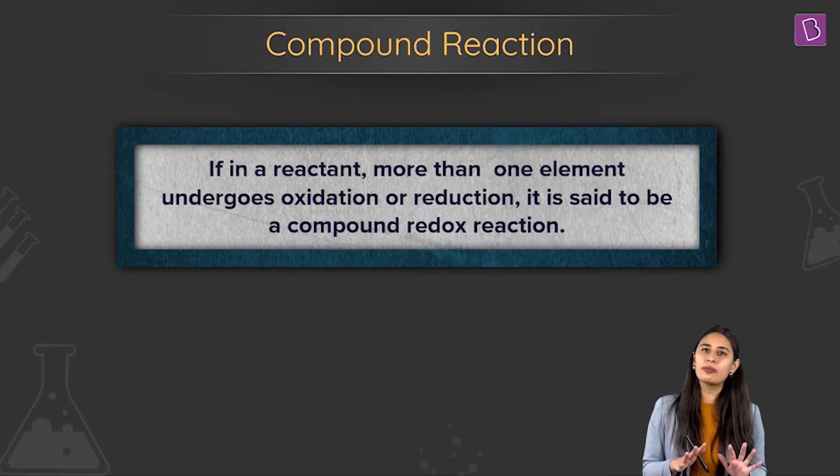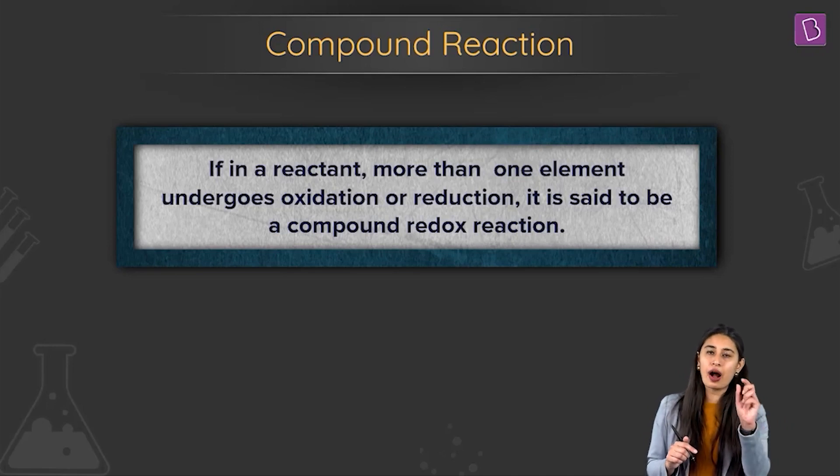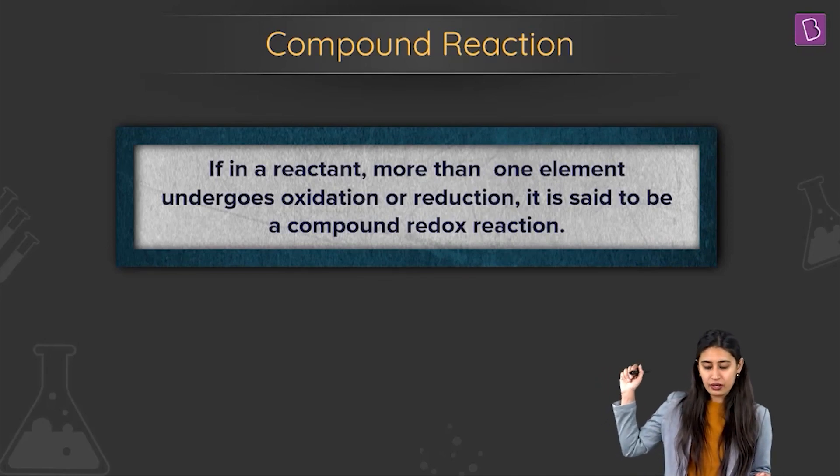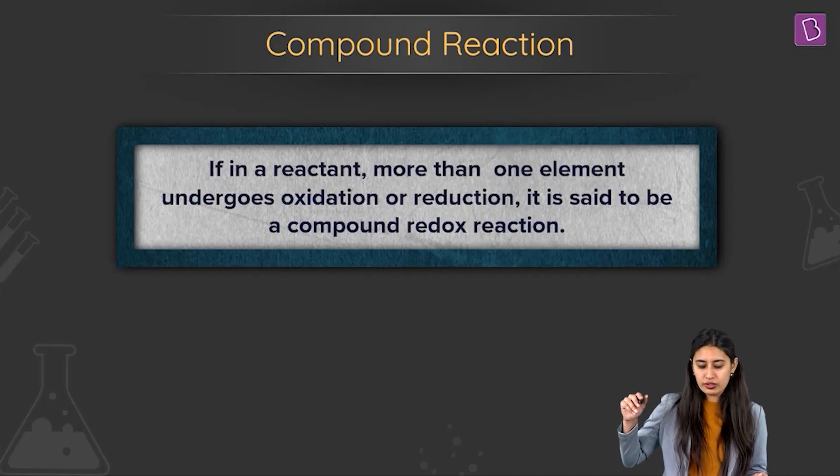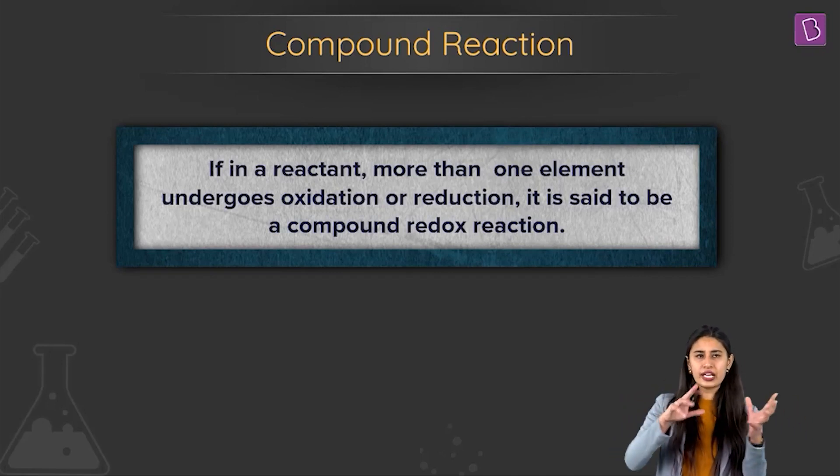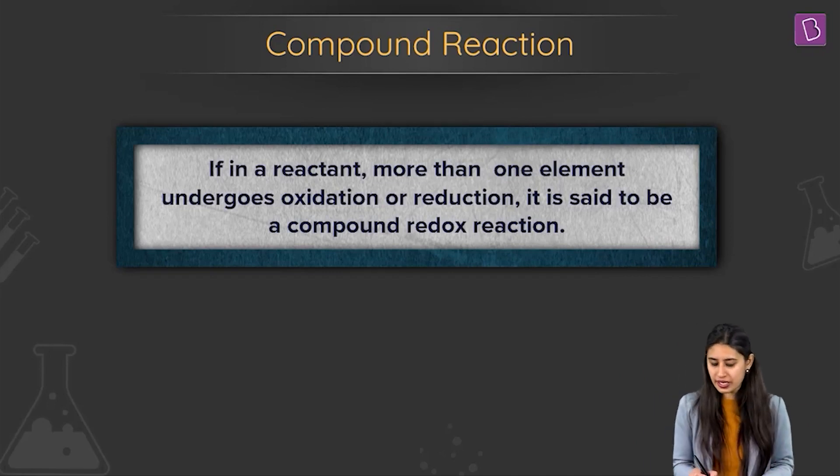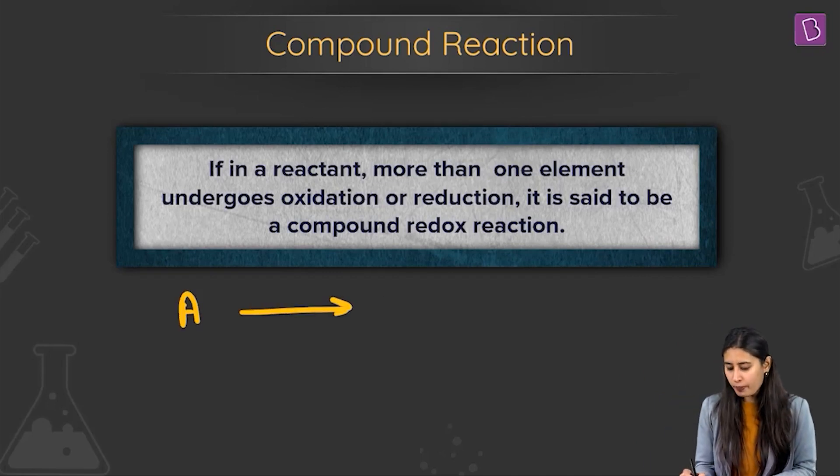But here when we are talking about compound redox, I'm going to show you how to find out n-factor for a half reaction which is such that if a reactant is forming products, let's say it's forming two products.